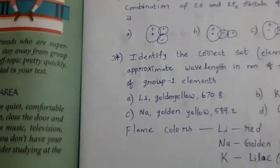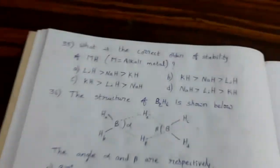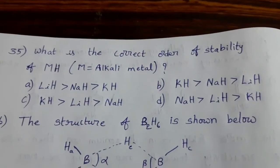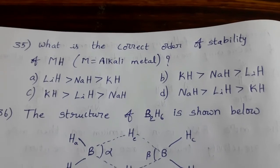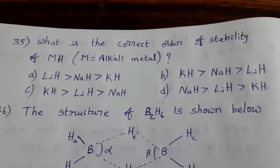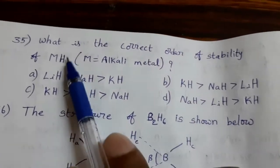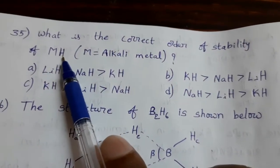Next, see the next one. What is the correct order of stability of MH? M is the alkali metal. So, alkali metal and hydrogen bonding, hydride. This is called hydride compound, general formula of the hydride.